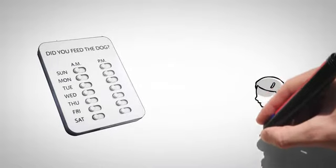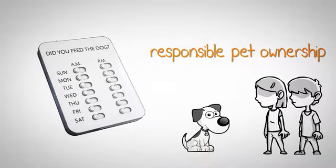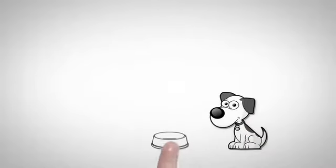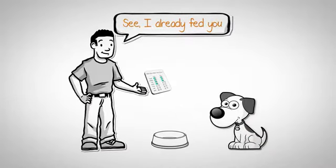DYFTD is a fun and practical way of teaching children about responsible pet ownership. It also helps reduce dog obesity due to overfeeding. If asked, dogs will lie.